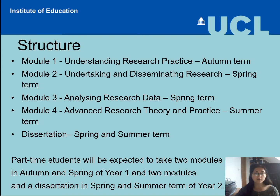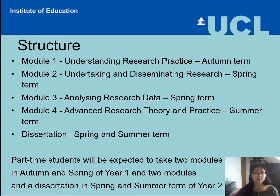On our program we have four modules, all of which are compulsory, plus a dissertation. Module one is Understanding Research Practice and runs in autumn term. Module two is Undertaking and Disseminating Research, which runs in spring term. Module three also runs in spring term in parallel with module two. Module four, which runs in summer term, is called Advanced Research Theory and Practice. The dissertation runs through two terms — it starts in spring term in January and submission is usually in early September. Part-time students will be expected to take two modules in year one and two modules plus a dissertation in year two.